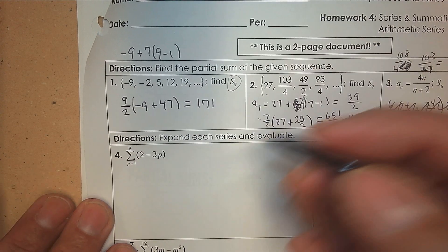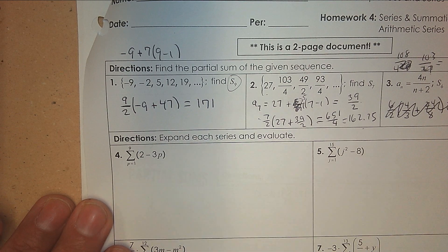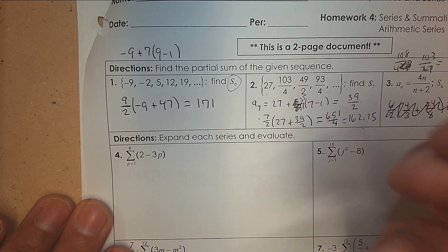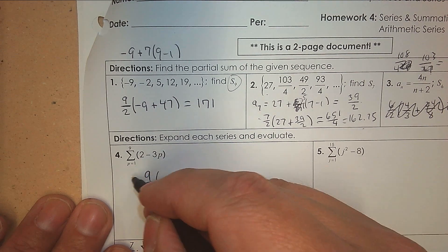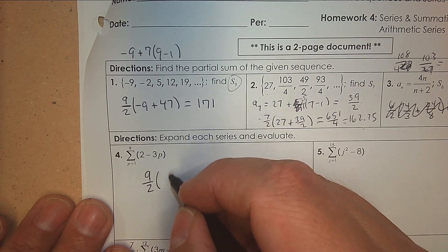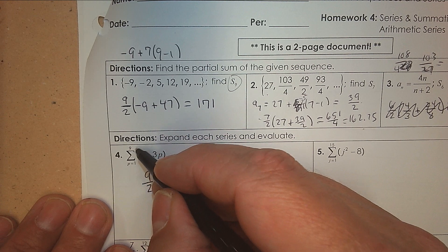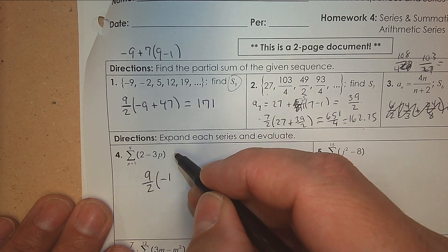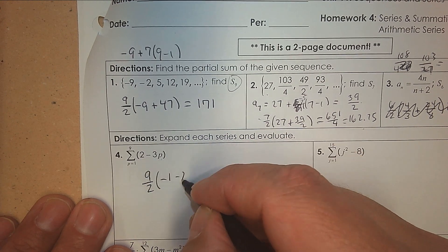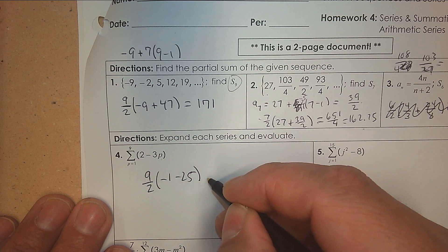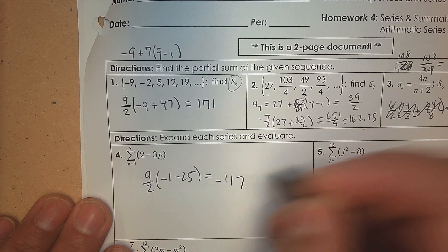So what do I need to know? How many terms are there? If I start at one and end at nine, there are nine terms. So we have nine terms divided by two. The first term — plug in one — gives you negative one. The last term — plug in nine: three times nine is 27, so that is negative 25. And that gives you the answer negative 117.